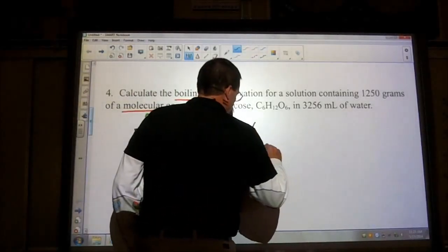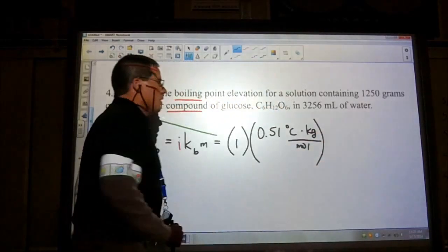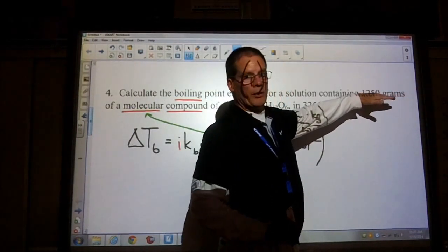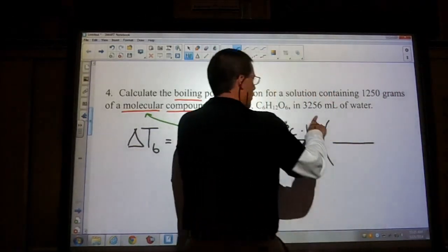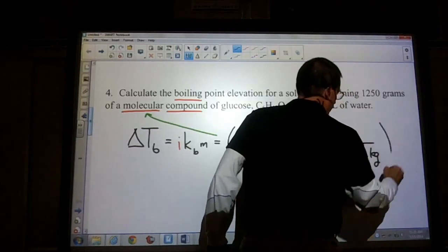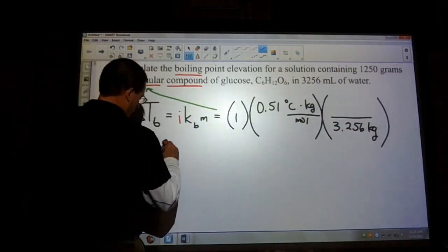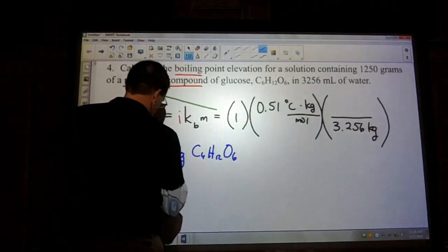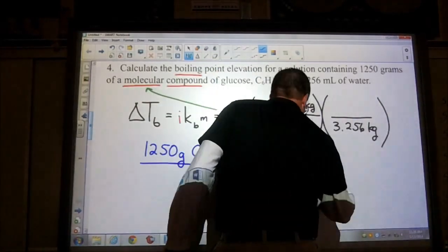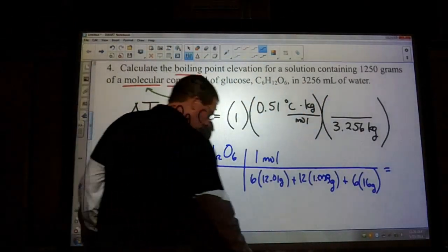The Kb, since we're boiling, that constant is 0.51 degrees kilogram per mole. And then now the hard part, where we actually have to change the milliliters of water into kilograms and the 1,250 grams into moles. But the kilogram part is the easy part. Divide that by 1,000, that gives you 3.256 kilograms. And let's find out how many actual moles of glucose we have here. So 1,250 grams of C6H12O6. I know it has a molar mass of around 180, but let's make it official here. 180.156, this is the molar mass.